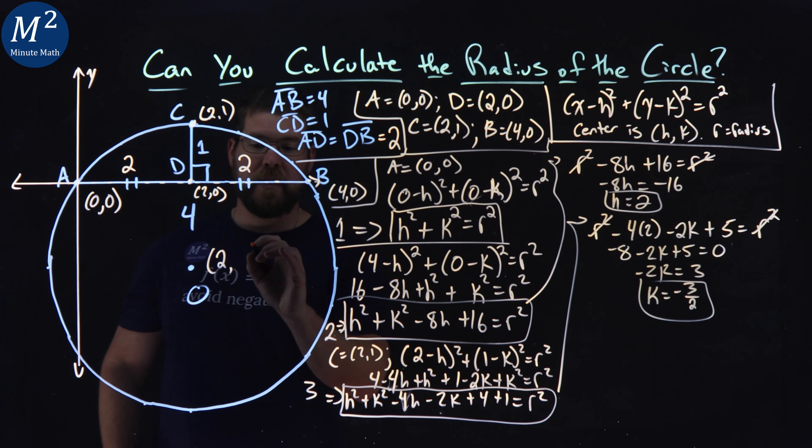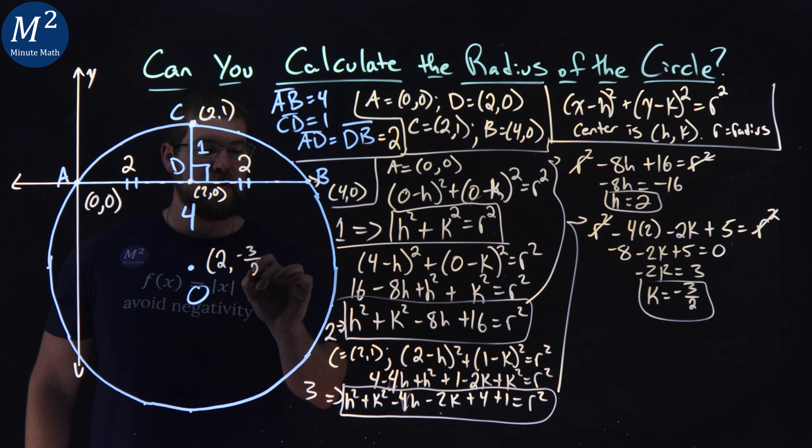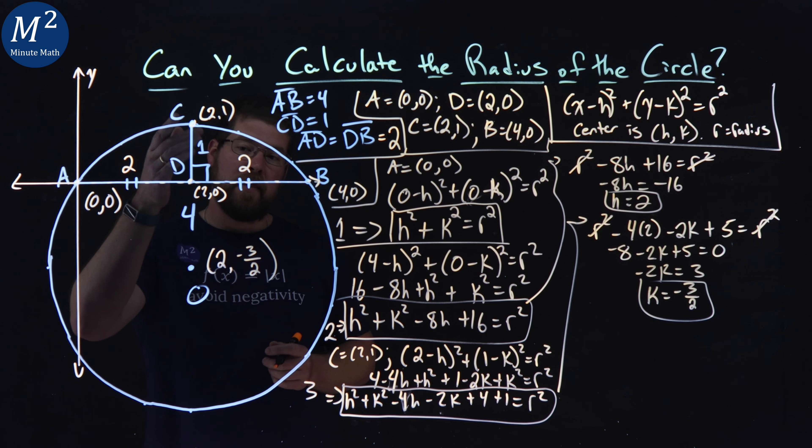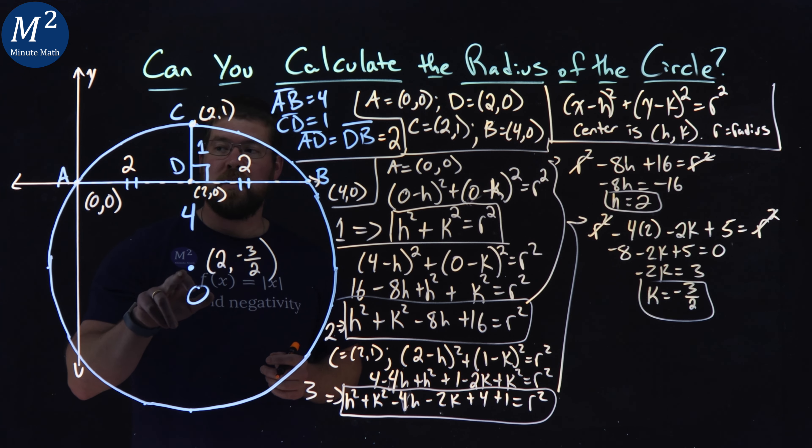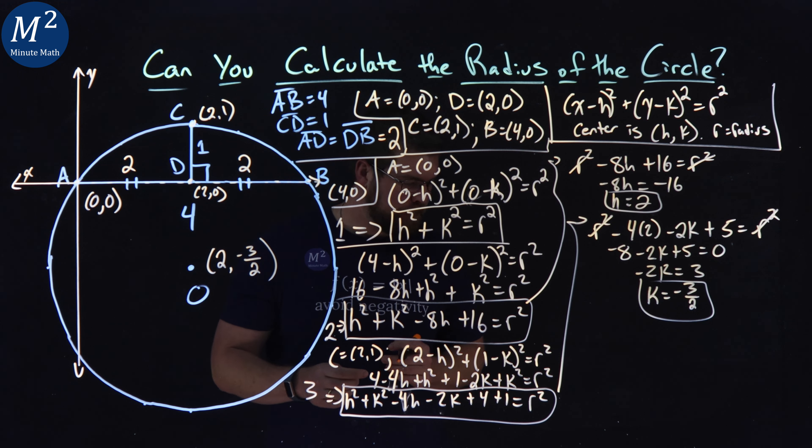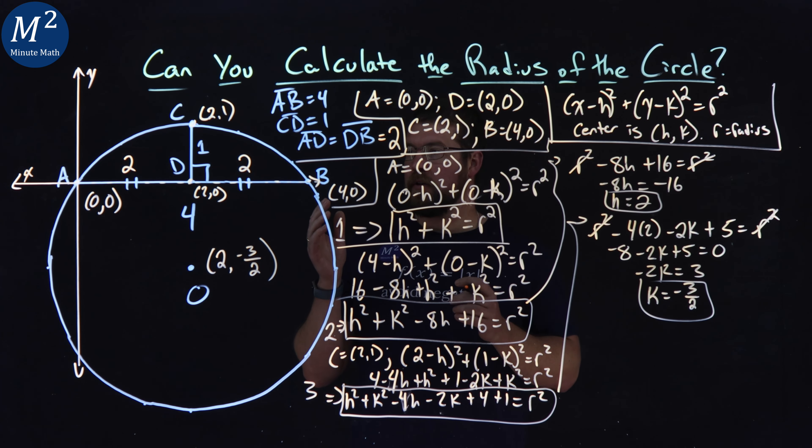So our coordinate point here is two comma negative three halves for the center of the circle, which makes sense. It's two units over. And then we'd come down some negative value here, if this was our X, Y axis.